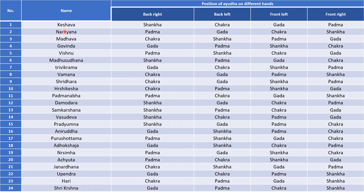All these 24 forms of Lord Vishnu — Keshava, Narayana, Madhava, Govinda, Vishnu and so on — you can see the arrangement of the tools: Shankha, Chakra, Gada, Padma. When the arrangement is back right, back left, front left, and front right, he is known as Keshava.